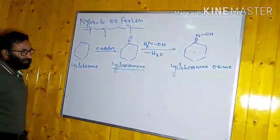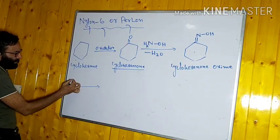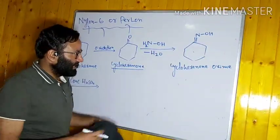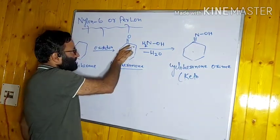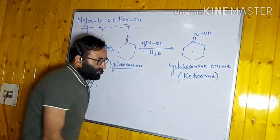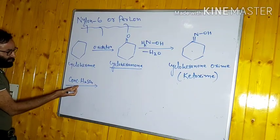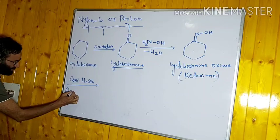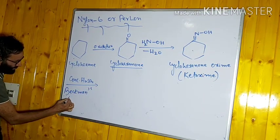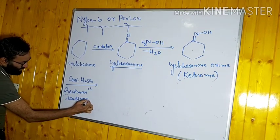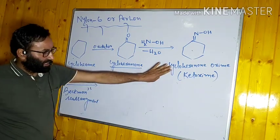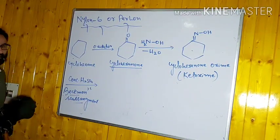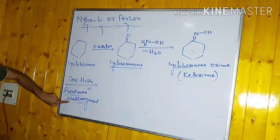Cyclohexanone oxime is a ketoxime because it is derived from a ketone. When this ketoxime is heated in the presence of concentrated sulfuric acid (acidic conditions), it undergoes a rearrangement known as Beckmann's rearrangement.